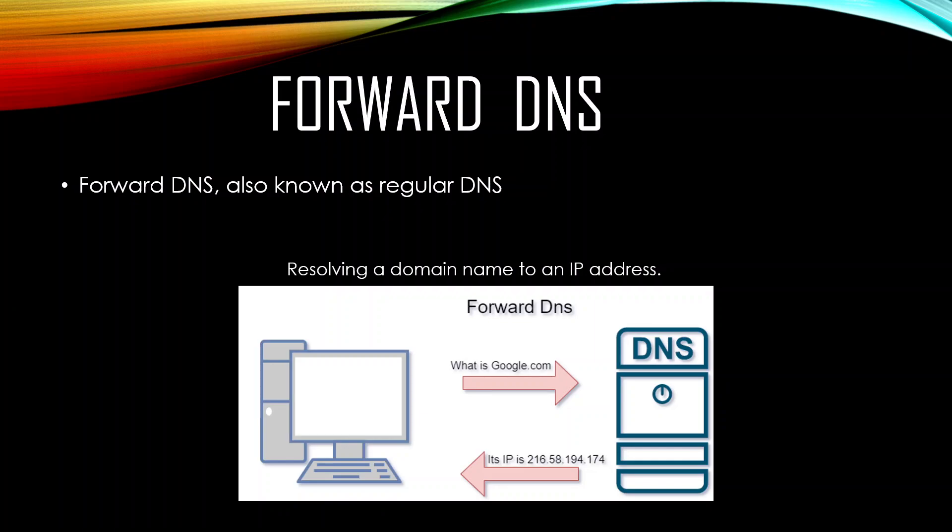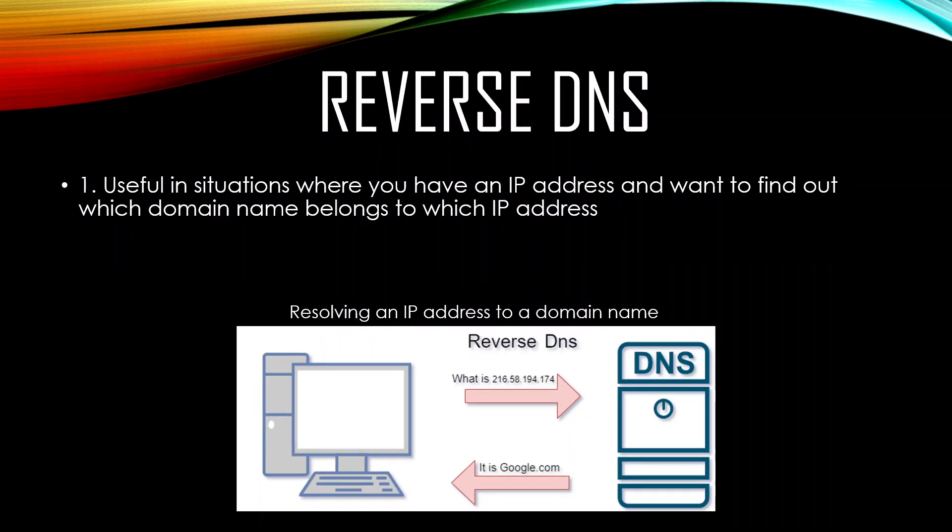Reverse DNS is very useful if you know the IP address of something but you want to know what domain name that IP address belongs to. That's why it's called reverse — you're doing the opposite. You request to your DNS server with a query saying: I have this IP address, I do not know the domain name for it. Can you send me the domain name? And then the DNS server responds with the domain name, for example google.com.